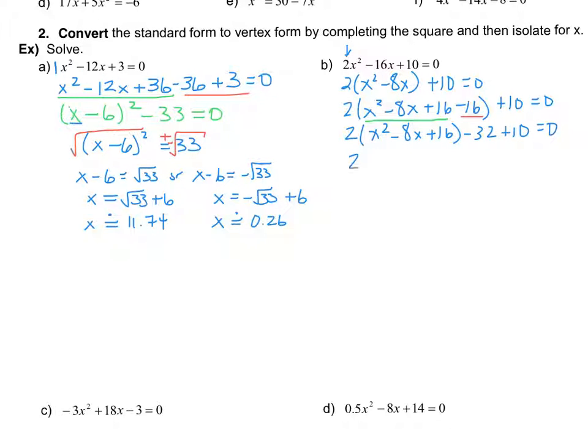Now I can factor that perfect square. Square root the first, square root the last, take the sign from the middle and make it squared. Minus 32 plus 10 is minus 22 equals 0. I'm going to add 22 to both sides. x minus 4 all squared equals 22. Then I'm going to divide both sides by 2 to undo the times by 2. I get x minus 4 all squared equals 11.